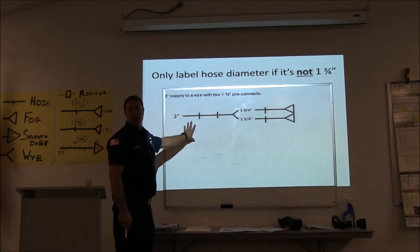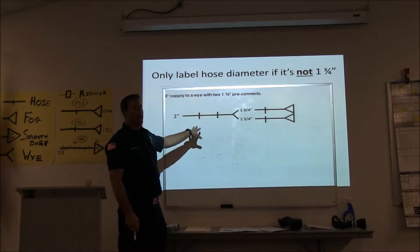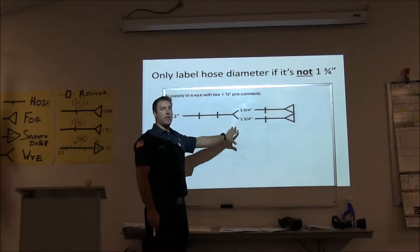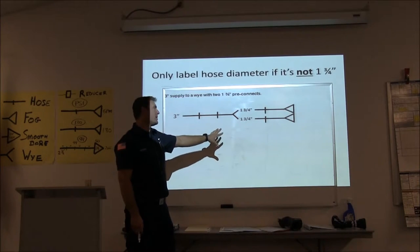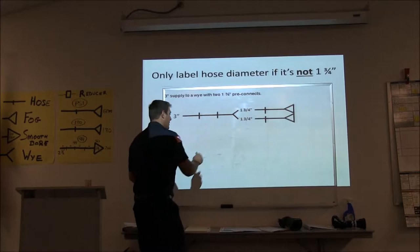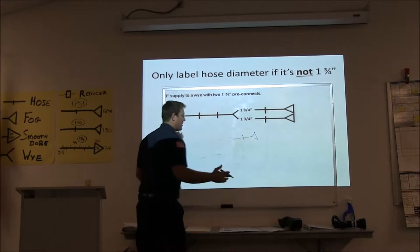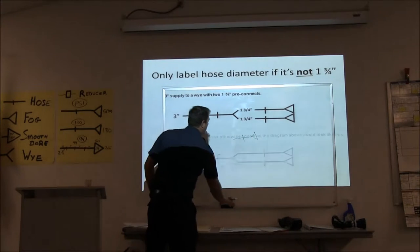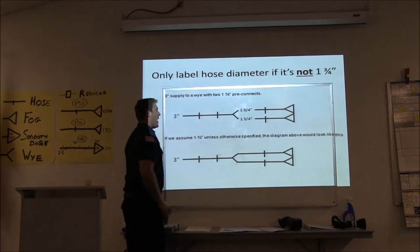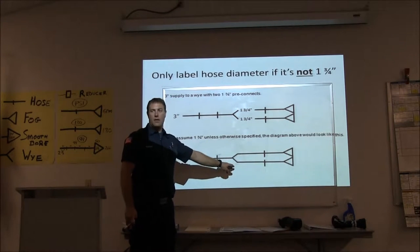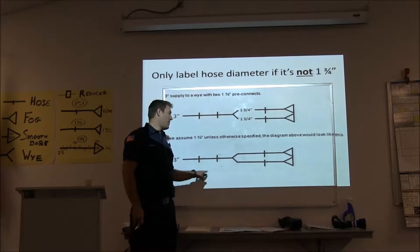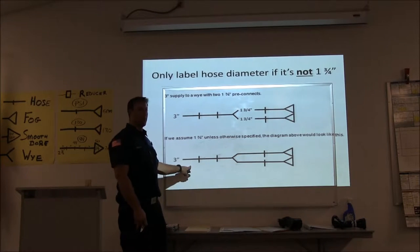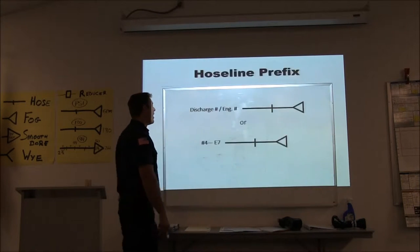We only need to label our hose line size if it's not inch-and-three-quarters. If I run a supply to a Y, I label the hose line size all the way through, but it gets messy. So if you see the symbol without a label, it's just an inch-and-three-quarter pre-connect. Our supply to Y is standardized: it's always inch-and-three-quarter and always three-inch.